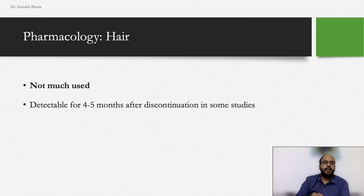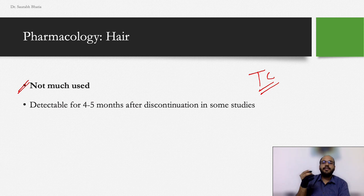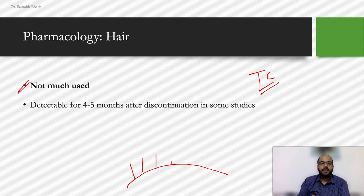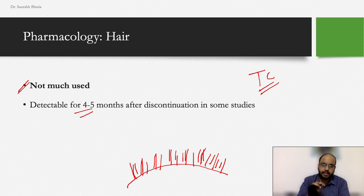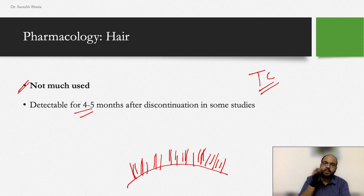In hair, fluconazole is not much used — there are only a few case reports of its use in tinea capitis. The scalp is a seborrheic area, and fluconazole doesn't travel well through sebum, so it's not very useful for tinea capitis. It is better to use itraconazole, griseofulvin, or terbinafine for those indications, even though fluconazole can be detected in hair for four to five months after stopping treatment.